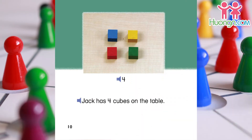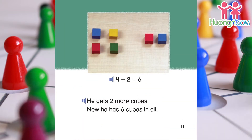Jack has four cubes on the table. He gets two more cubes. Now he has six cubes in all. Four plus two equals six.